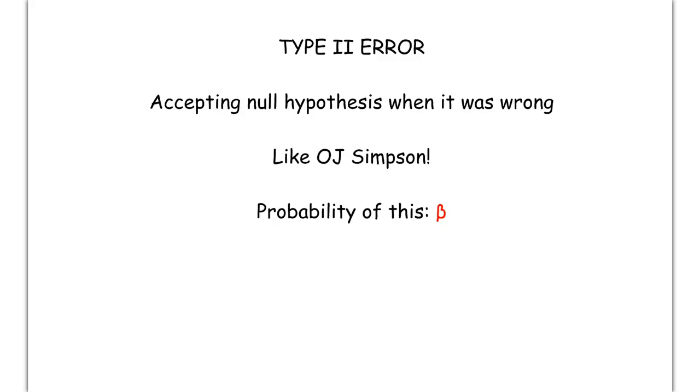Just like alpha represents the probability of a type 1 error, the Greek letter beta, which looks like a capital B, represents the probability of a type 2 error.